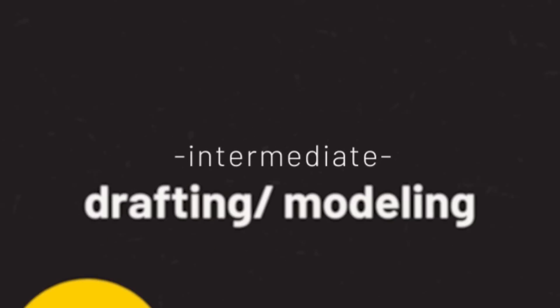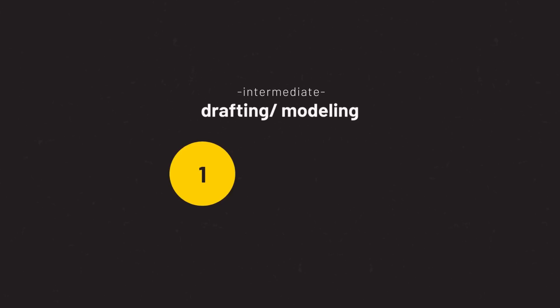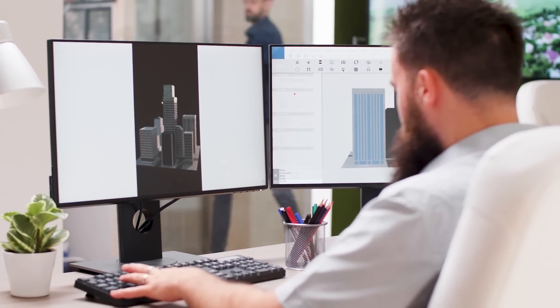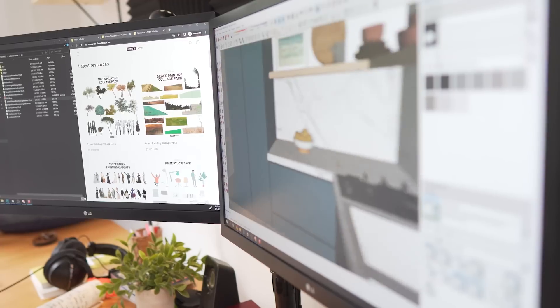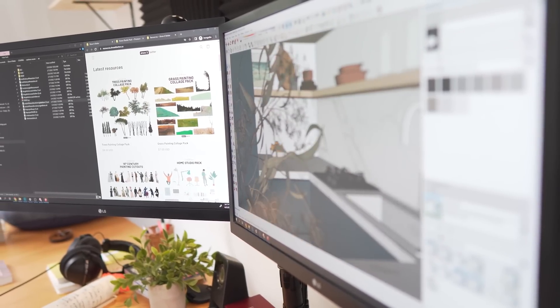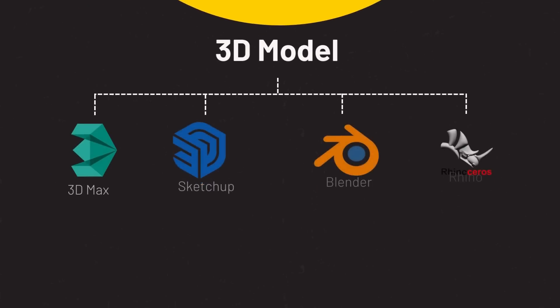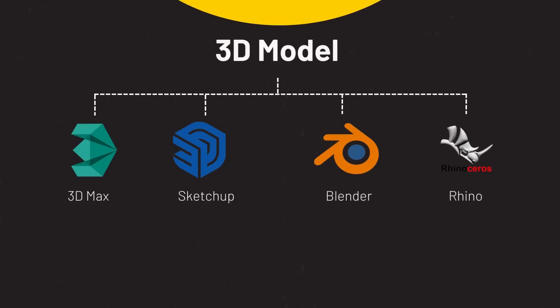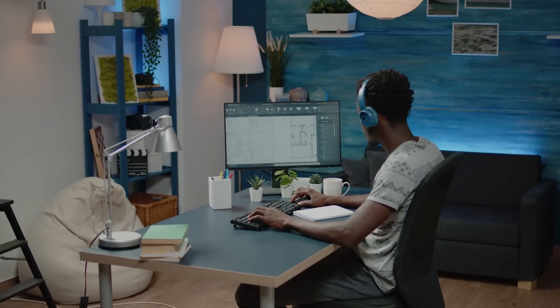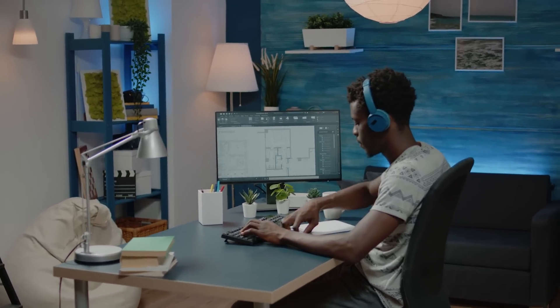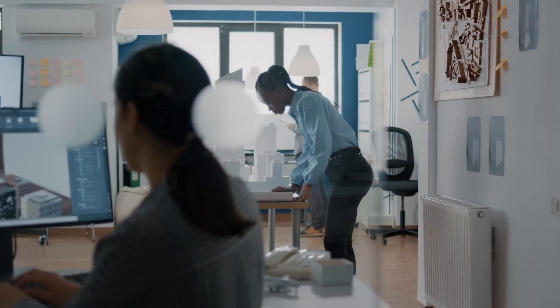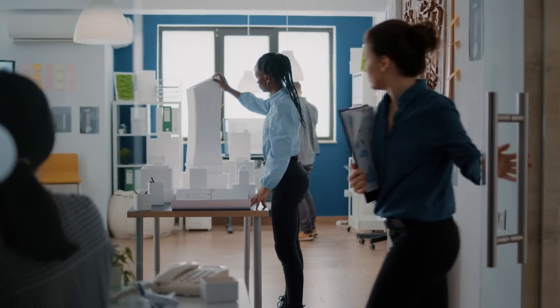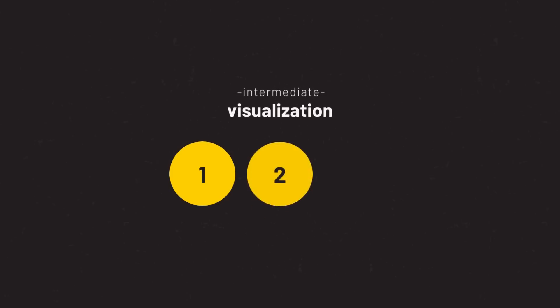Intermediate level. For our first category, modeling, you need a program where you can polish your 3D model and make it ready for visualization. You will have to choose depending on where you are, where you want to work, and your budget. Some options are 3ds Max, Rhino, SketchUp, or Blender. In some cases these programs can even be helpful in the concept phase of a project, allowing you to model fast and sometimes complex forms.